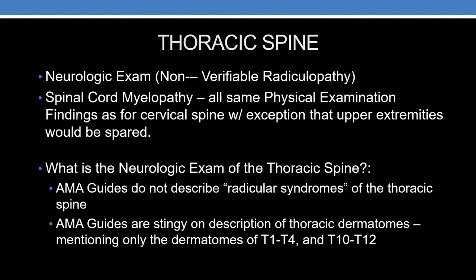Regarding radiculopathy, the AMA guides do not describe radicular syndromes of the thoracic spine. The thoracic spine nerve roots — whose anterior primary rami comprise the intercostal nerves — have no known reflexes that we can test. Even on the sensory exam, the AMA guides are limited, mentioning only the dermatomes T1 through T4, and then T10 through T12.